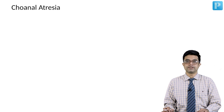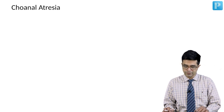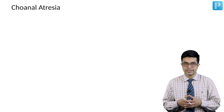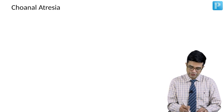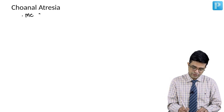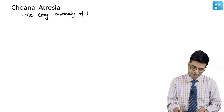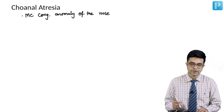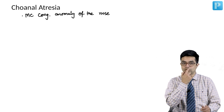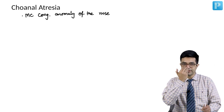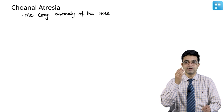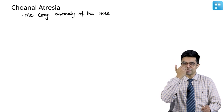Choanal atresia is a very important topic from an entrance exam point of view. Choana refers to the choana of the nose, and atresia means the absence of complete lumen formation. Children with choanal atresia will have a normal-looking nasal opening bilaterally, but airflow through the nasal passage may be interrupted due to an obstruction present at the level of the choanae.